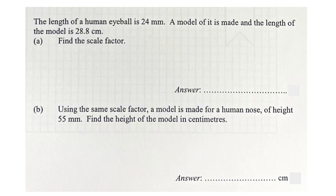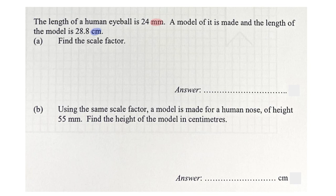Hello everyone, welcome to this video where we are given that the length of a human eyeball is 24 mm. A model of it has a length of 28.8 cm. The very first thing to note is that we should change to the same unit — we convert 28.8 cm to 288 mm by multiplying by 10.